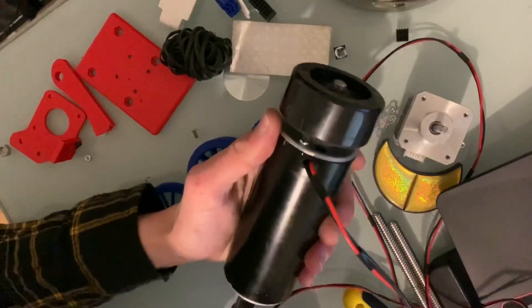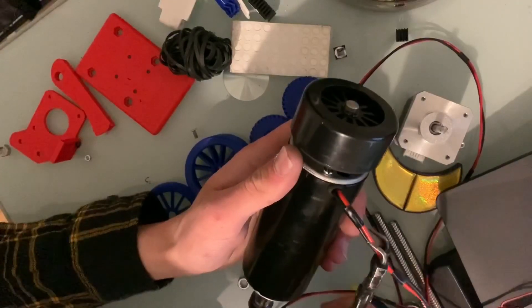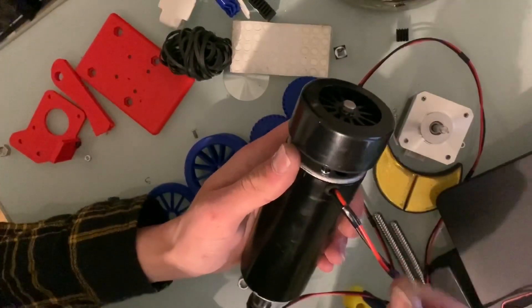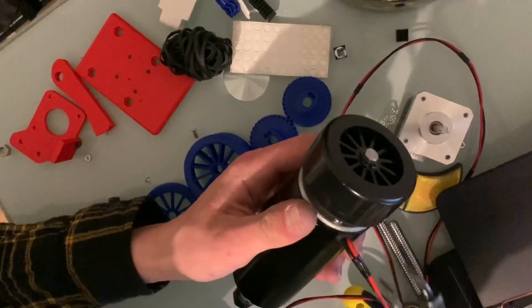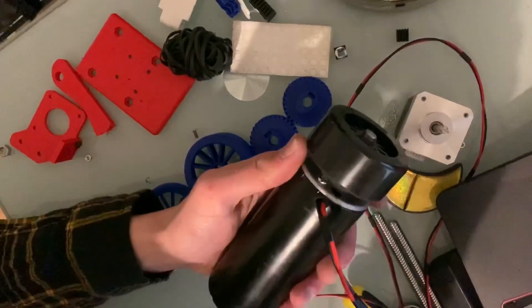What I'm going to do here is this is a 500 watt Machfit China spindle, whatever they call it on Banggood or eBay or whatever site you buy it on.